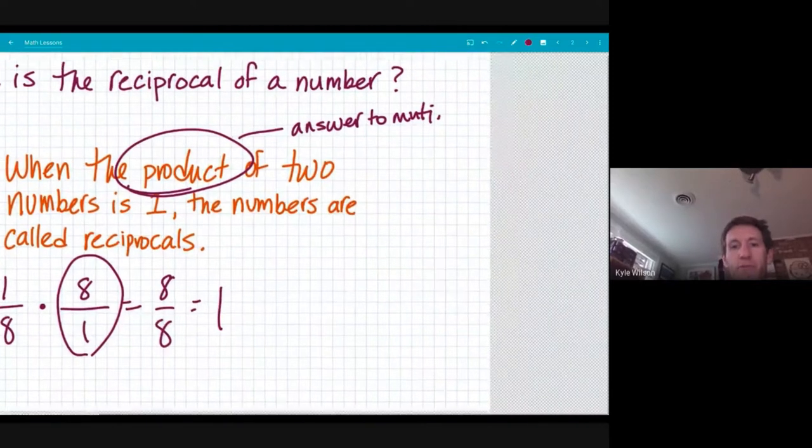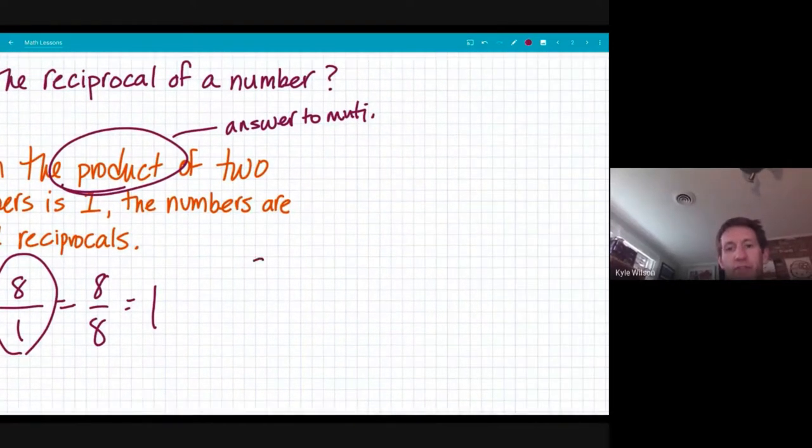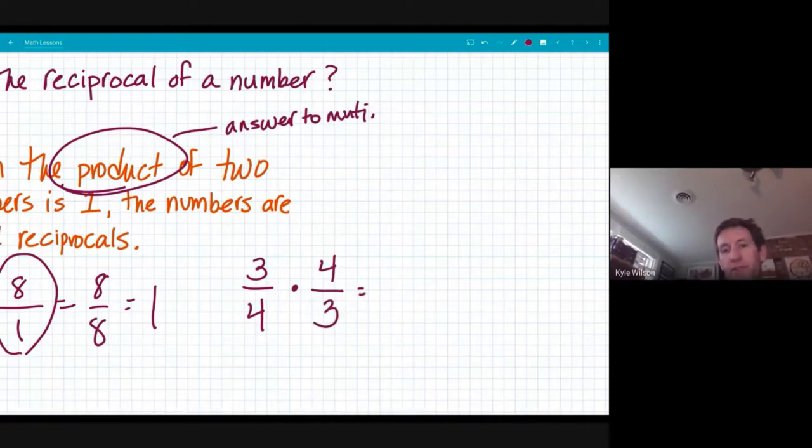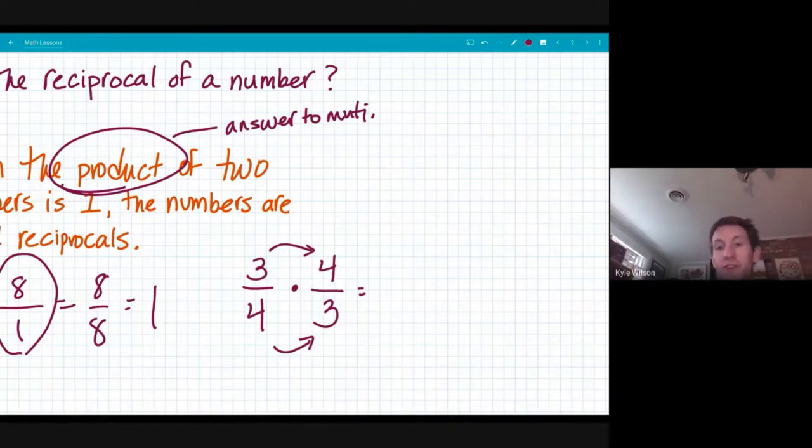Another example could be if I gave you three fourths, you want to be thinking what fraction could give me an answer of one. Four thirds would give me an answer of one because four times three is 12 or three times four is 12 and four times three is 12. And that gives me 12 twelfths, which equals one.